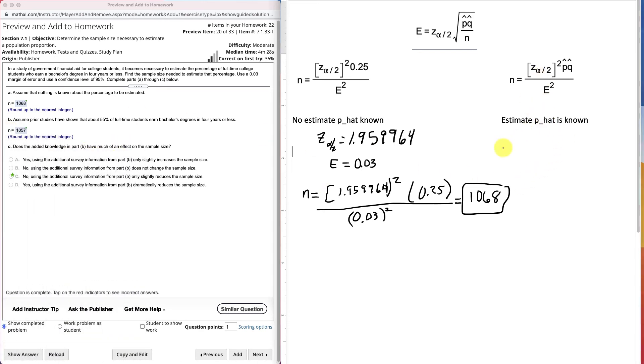So let's create our new equation over here. n is going to be equal to that same z-value, 1.959964 squared, but this time we use p-hat. Well what's p-hat? Well p-hat is the 55%. It's the estimate of the sample proportion. So .55. Now how do I get q-hat? Well q-hat is just 1-p-hat. So if that's .55, we must have .45. And then that, of course, is all over .03 squared.